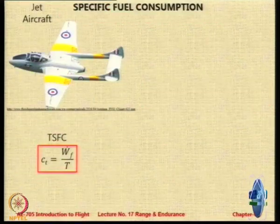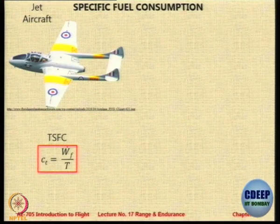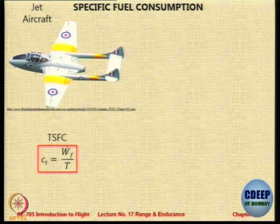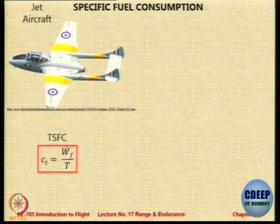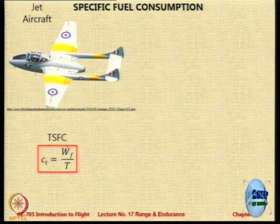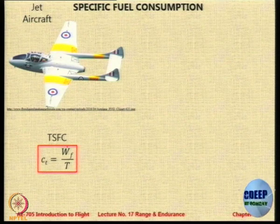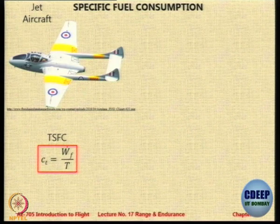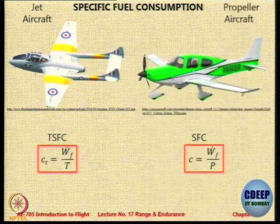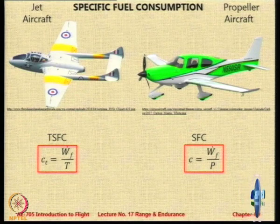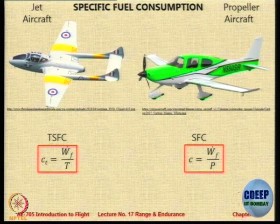For jet engine aircraft we talk about TSFC, or the thrust specific fuel consumption, called C subscript T, which is the fuel flow W-dot-F — fuel flow per unit thrust produced, or amount of fuel consumed over time per unit thrust. For propeller aircraft we are concerned about power, so we define SFC as the fuel flow per unit power produced.